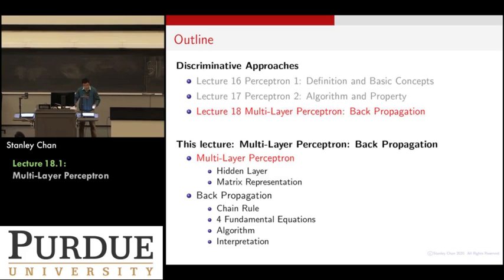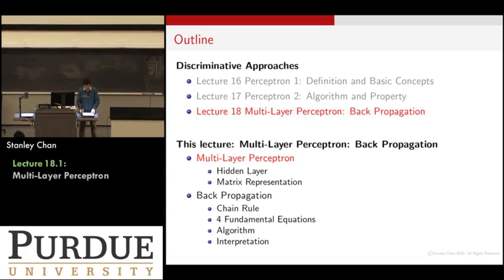In this multi-layer perceptron, you're going to have multiple layers of neurons and we are going to see how these can get connected and how this will change the landscape of your problem. We also want to look at the matrix representation of this hidden layer multi-layer perceptron, and then we will talk about backpropagation — a method to update the network parameters when you have multiple layers.